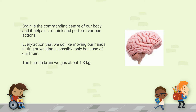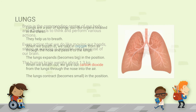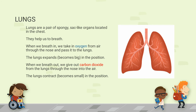Our brain weighs about 1.3 kg. Next is the lungs. We have a pair of lungs, meaning we have two lungs. It is a sponge-like structure, very soft, located in the chest. It helps us to breathe. When we breathe in, that is inhale, the lungs expand and become big — when we inhale, we take in oxygen. When we breathe out, that is exhale, our lungs contract and become small.